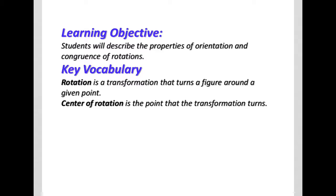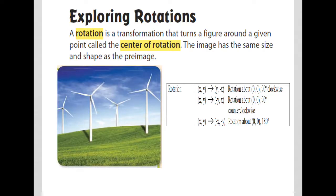Key things we need to remember: orientation means the vertices will change from one position to another position as we rotate. Rotation itself is a transformation that turns a figure around a given point — this is what our orientation is centered around. The center of rotation is the point that the transformation turns around, and the image has the same size and shape as the pre-image.